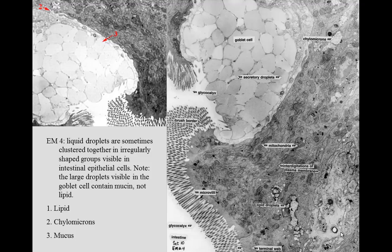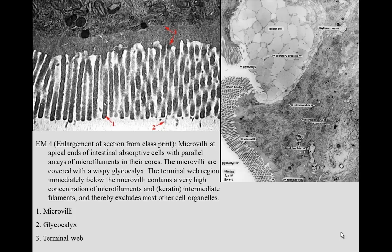Here we can see EM4 is a surface view, the luminal view, of intestinal absorptive cells showing you the brush border. The clear space below the brush border is the terminal web of these cells.